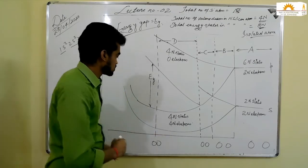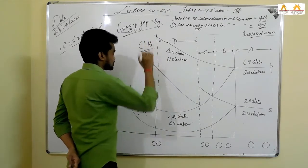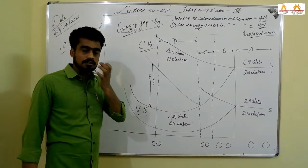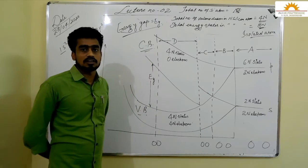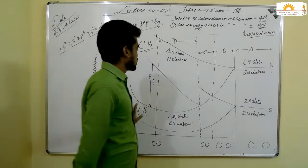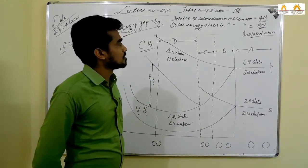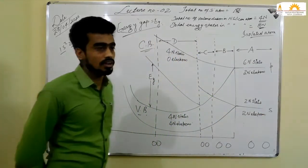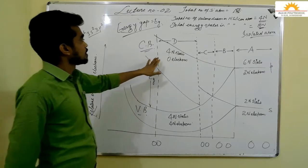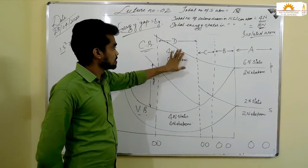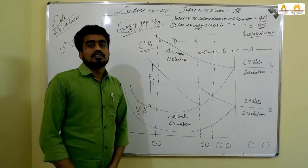The lower band is also known as the valence band and the upper band is known as the conduction band. In the valence band, valence electrons are present, and in the conduction band, conduction electrons are present. These are the two sub-shells in the silicon atom — the last orbit — and we see that 4N states are available in the lower band. Thank you.